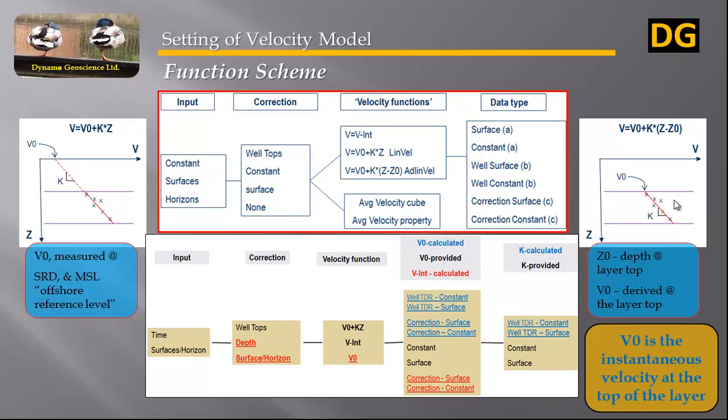In case the layer depth and layer thickness changes strongly away from the wells, the linear velocity function might give too high velocities at the layer bottom in these areas.